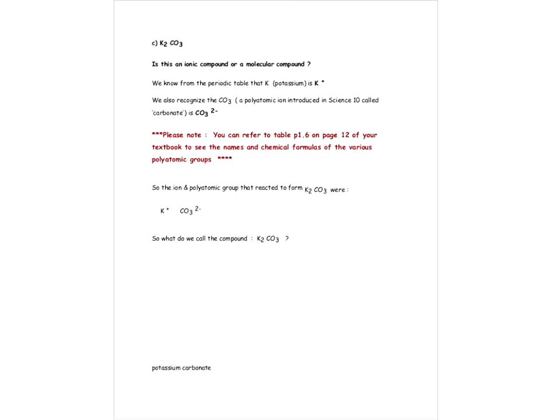Please have a look at page 12 in your textbook — that has the chart with all the names of the polyatomic ions. I'd recommend memorizing the most common ones, like ammonium and carbonate, so when you come across something like this, you don't have to look at the chart. We know we have potassium K+ and carbonate, so what are we going to call K2CO3? Potassium carbonate — that's right.